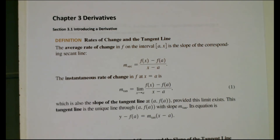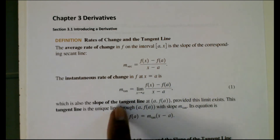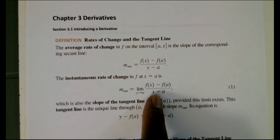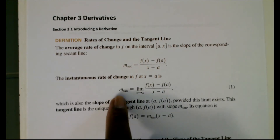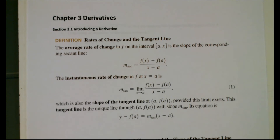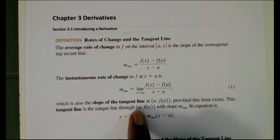We use this notation for the slope of the secant line: f(x) minus f(a), divided by x minus a. That's just the average rate of change. For the instantaneous rate of change, we use the same formula — f(x) minus f(a) divided by x minus a — but this time it's the slope of the tangent line, and we take the limit as x approaches a. This is also the slope of the tangent line at (a, f(a)), provided the limit exists.